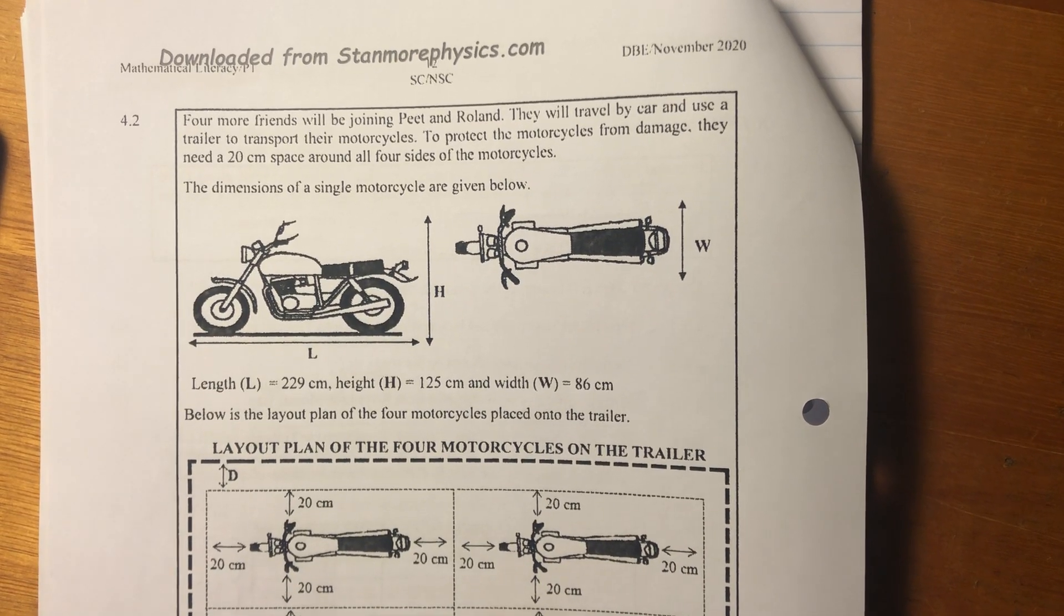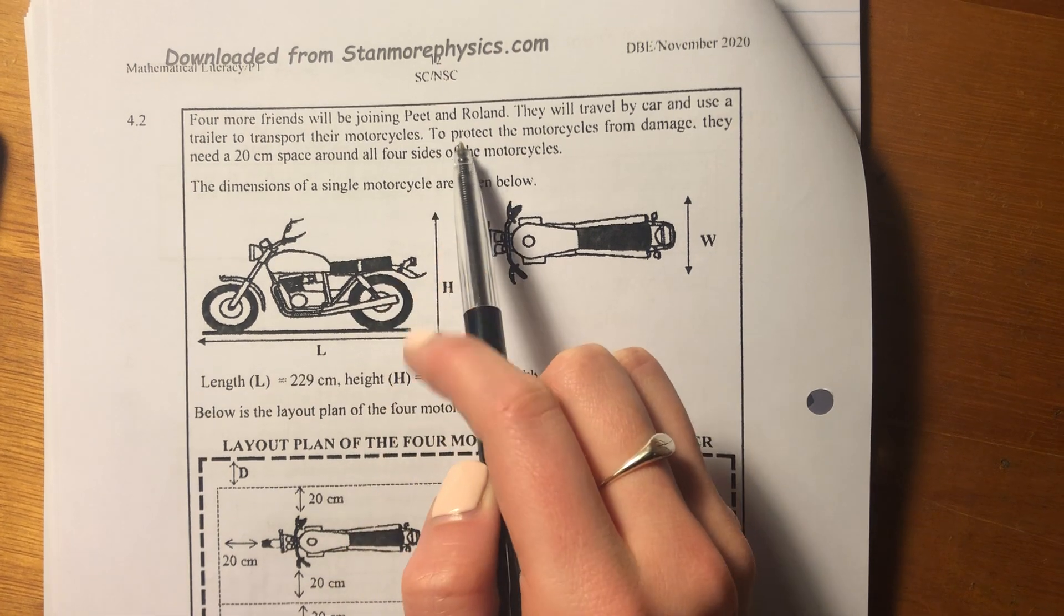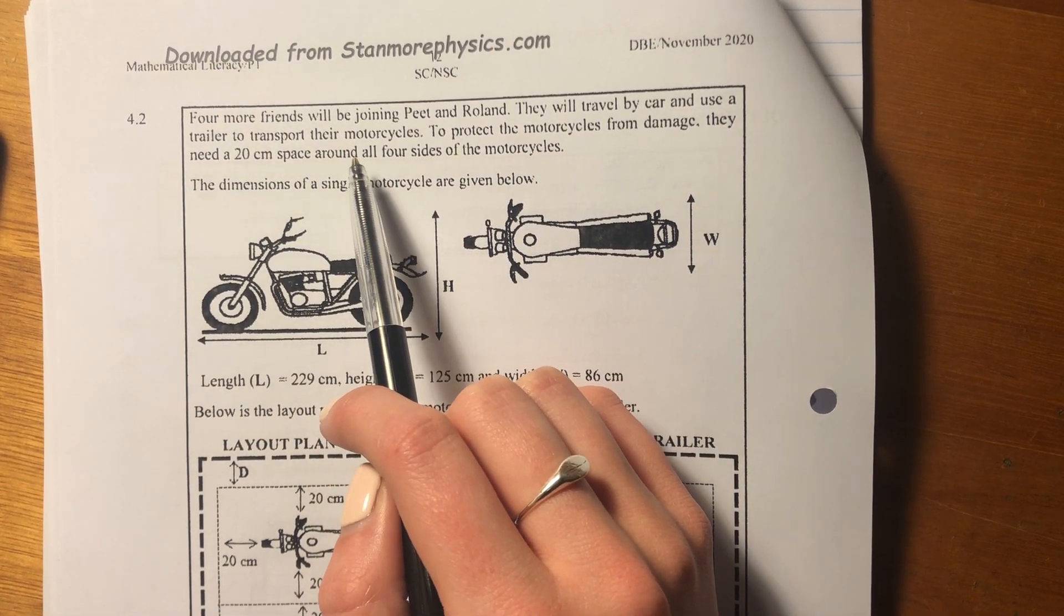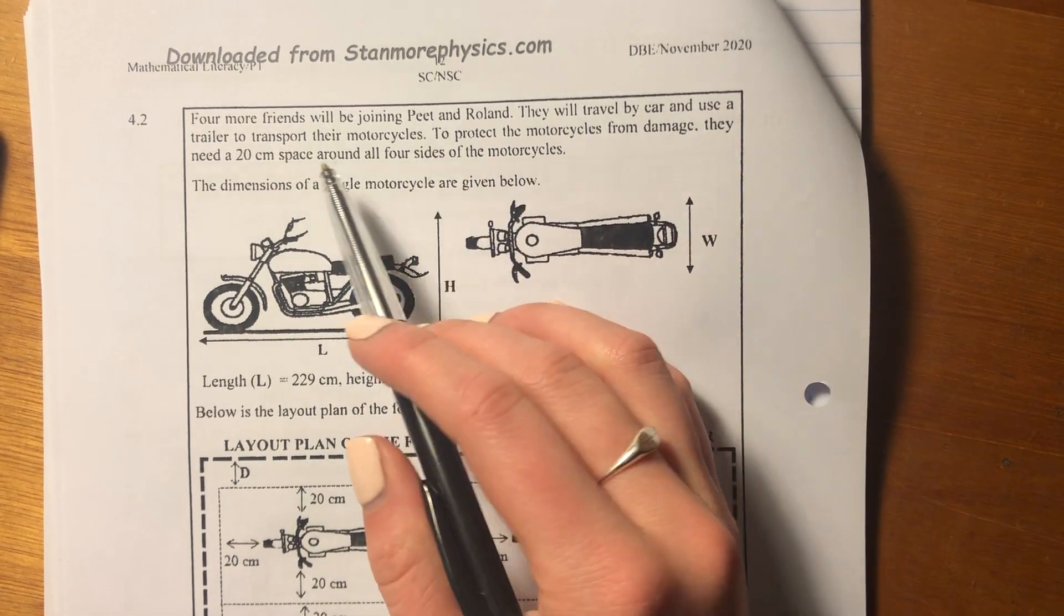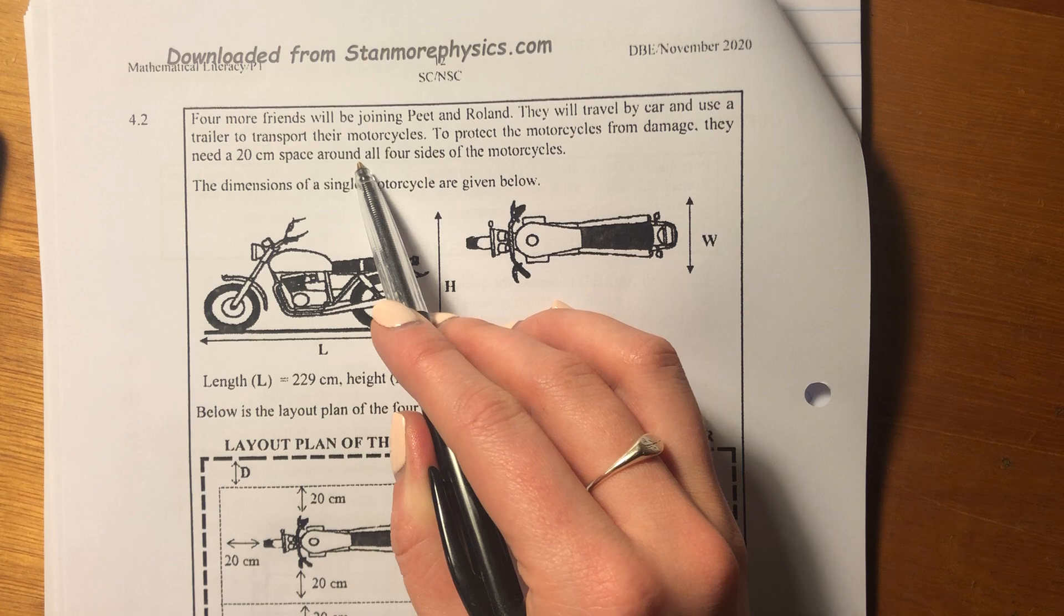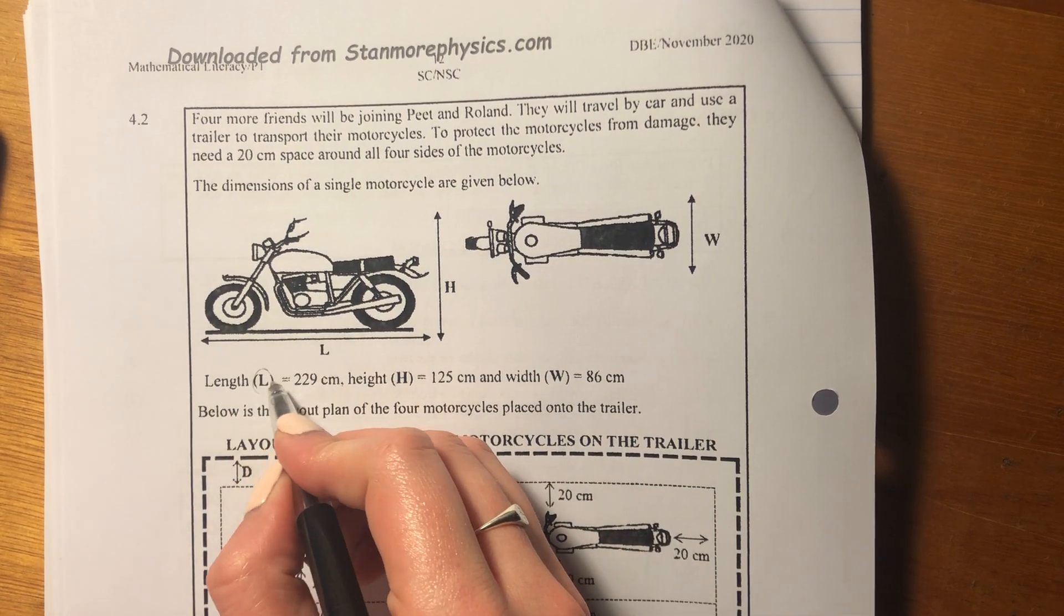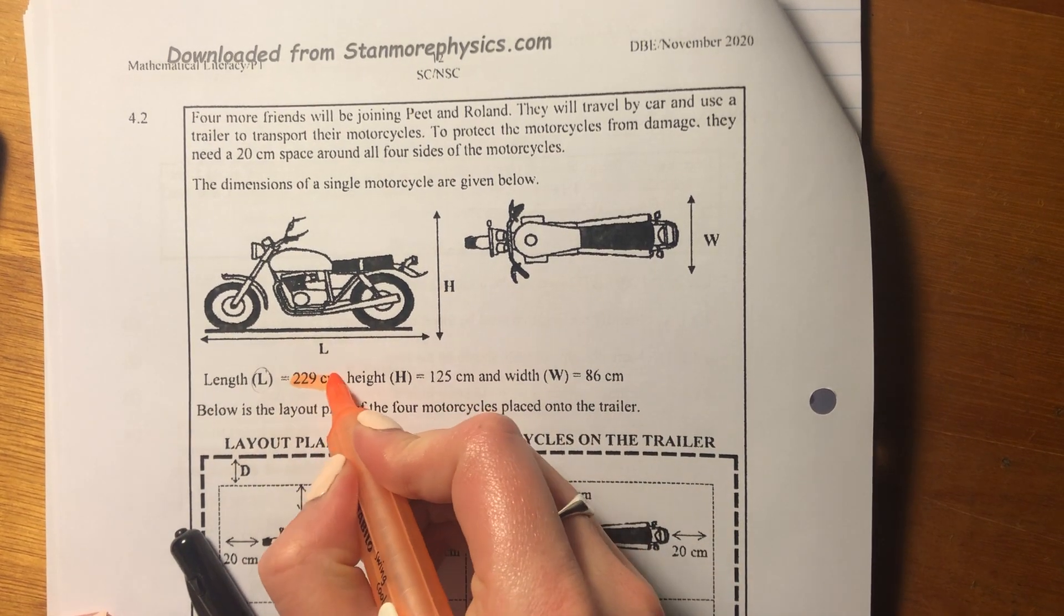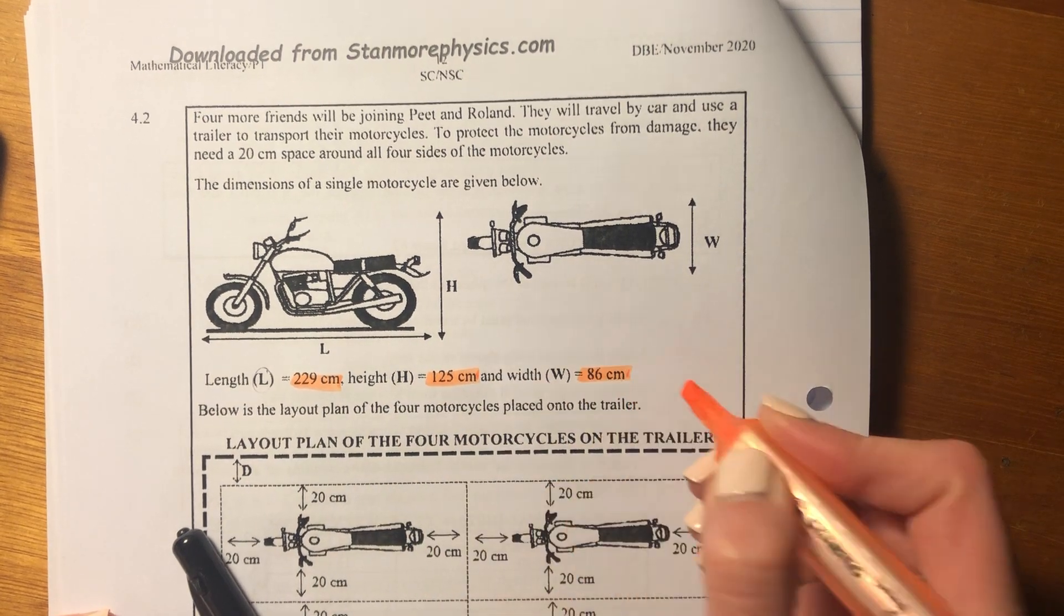Okay, let's now do 4.2. So it says four more friends will be joining Pete and Roland. They will travel by car and use a trailer to transport their motorcycles. To protect the motorcycles from damage, they need a 20 centimeter space around all four sides of the motorcycles. So it tells us that the length of the motorcycle is 229 centimeters. I'm just going to highlight these because I think they're going to be important. The height is 125 and the width is 86.